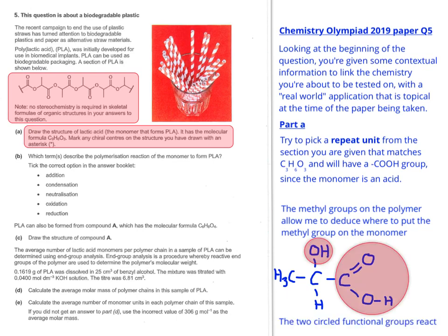So the two circled functional groups react with an equivalent functional group in the next monomer along. So they don't react with each other, although they can do, but in this case, if you look at the structure of the polymer, it's a series of this molecule in a row, and the COOH of one molecule reacts with the OH of the other molecule to form an ester linkage.